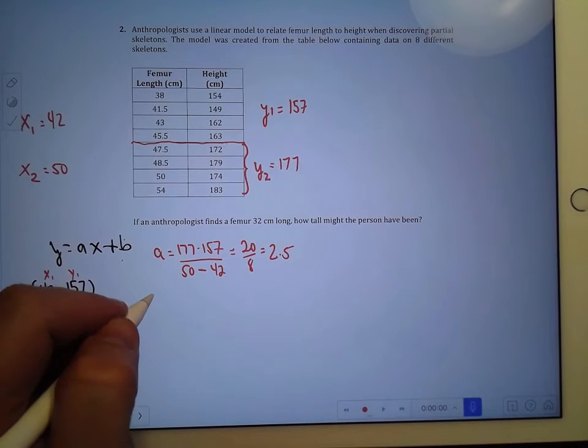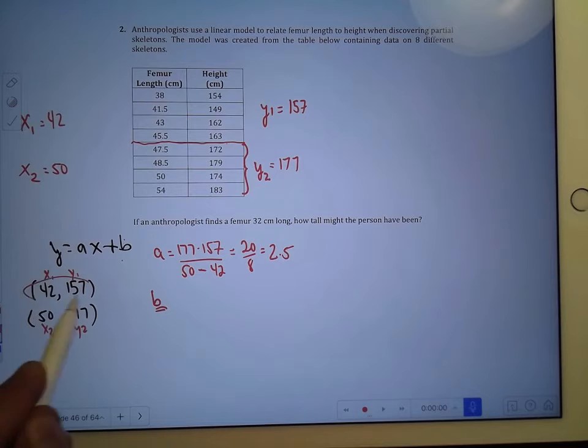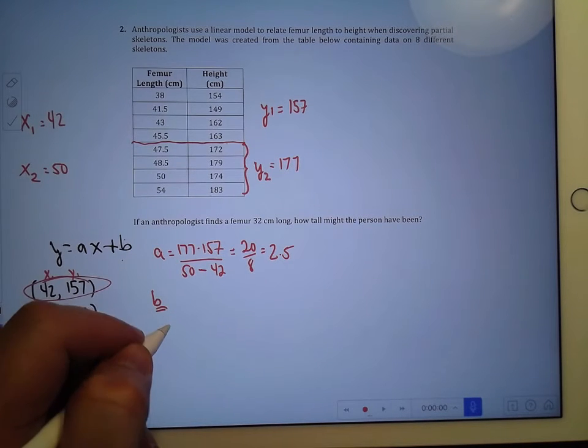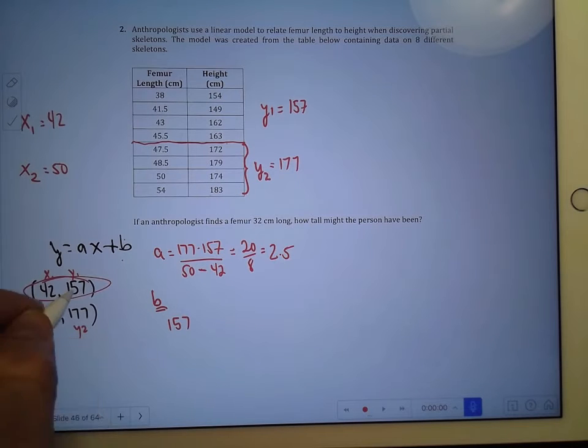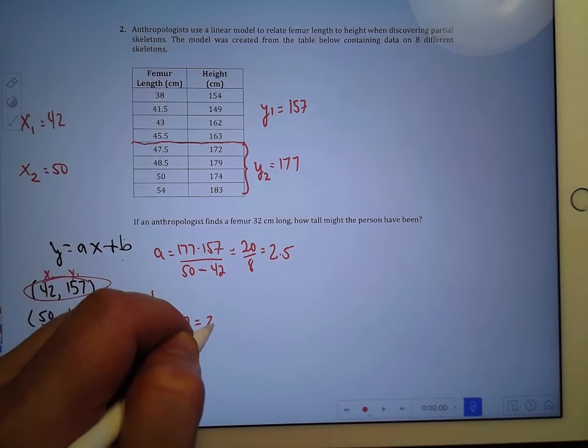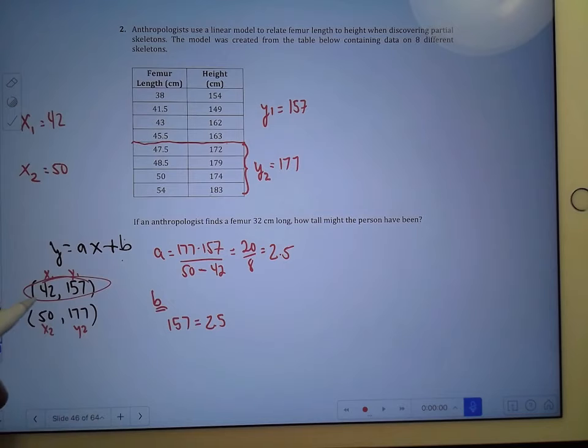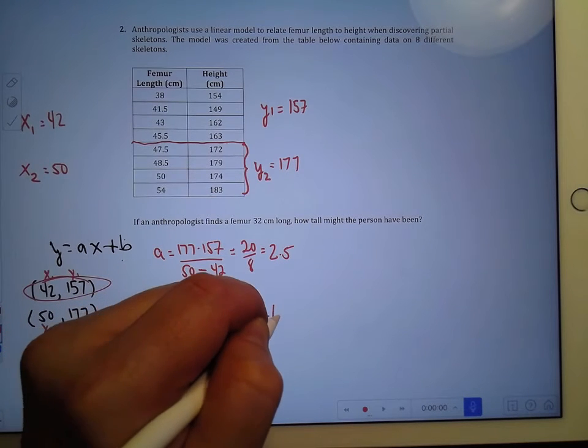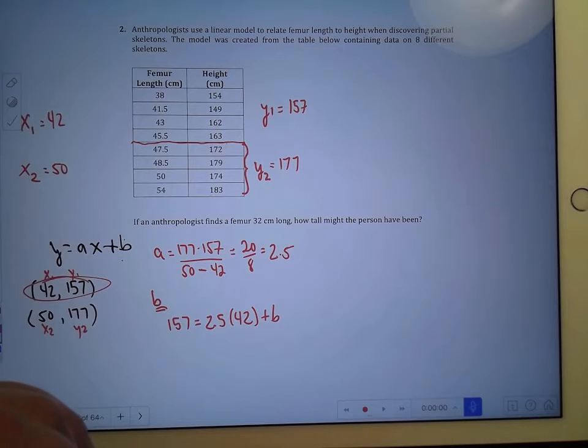Now you've got to get your b. And to get that b, we use one of the points—I'll use point 1 over here—and the a that we found. So 157 is the y, equals 2.5 is the a, x is 42, and to that I'm going to have to add the b.